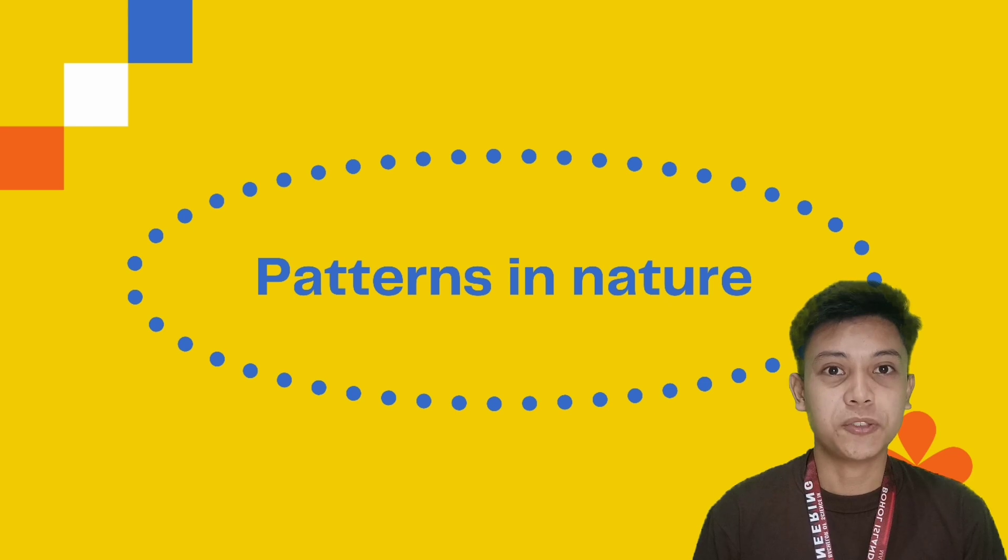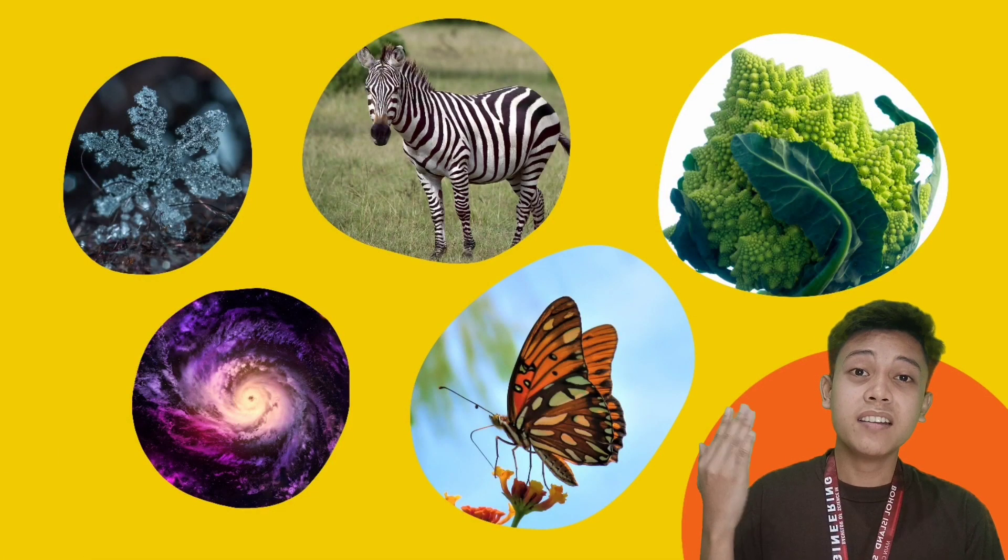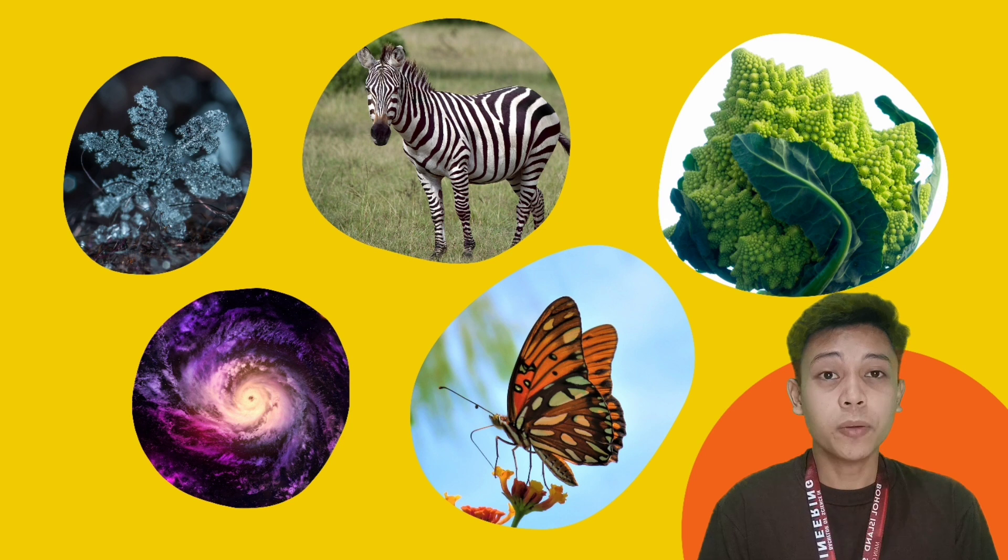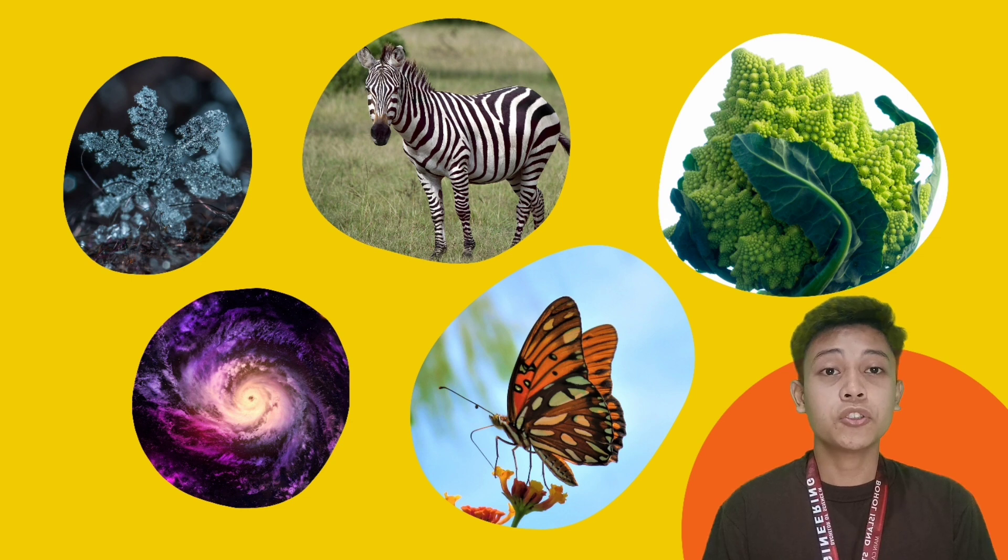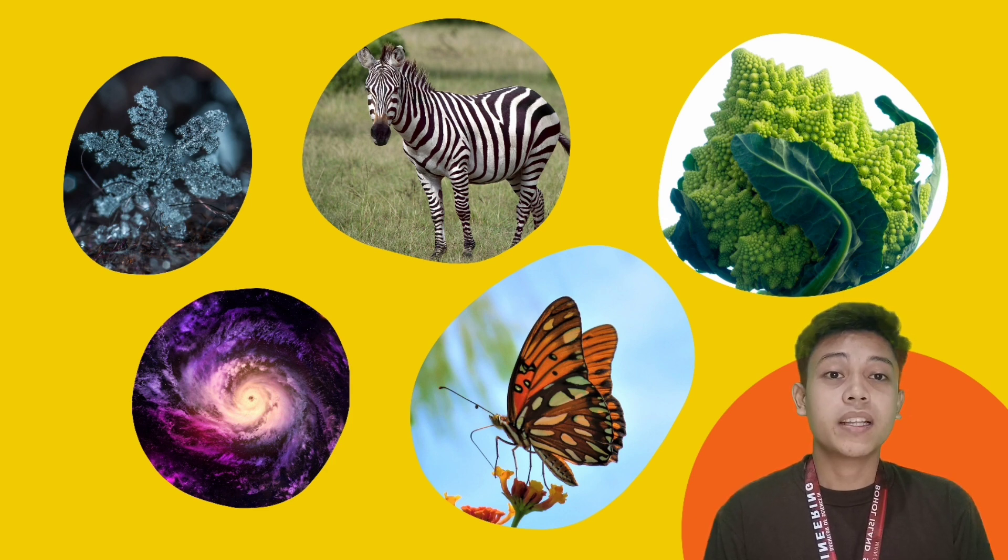Patterns in Nature. We have here above my big head, snowflake symmetry as it forms, zebra stripes in its skin, romanesco cauliflower as it grows, our very own Milky Way galaxy has its unique spiral pattern even though it's chaotic, and the last but definitely not the least is the patterns on a butterfly's wing which is colorful and beautiful.